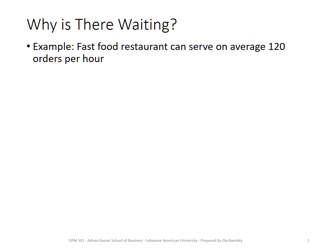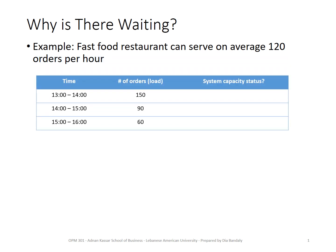Let's try to explain why there will be waiting lines in service companies. Here is an example of a fast food restaurant where orders or demand on meals varies with the time of the day. We can see that we have 150 orders — let's assume one order per customer — so 150 customers during that hour because it's the big lunch hour.